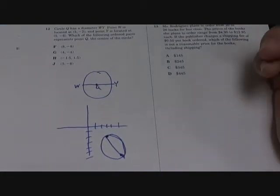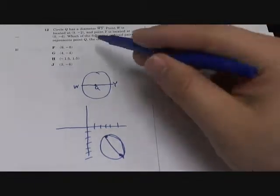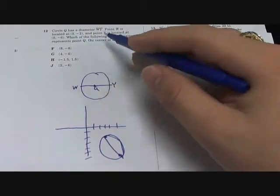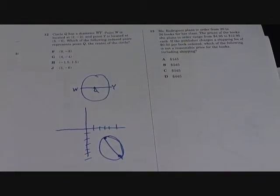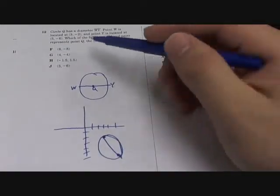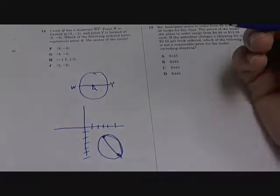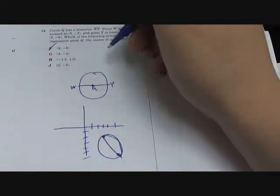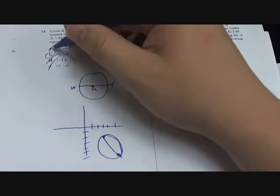So it's gonna look something like that. Which ordered pairs represents Q, the center of the circle? The center of the circle has to be between 3 and 5, which is gonna be 4. So that's not a 4, that's not a 4, that's not a 4, so the answer is...